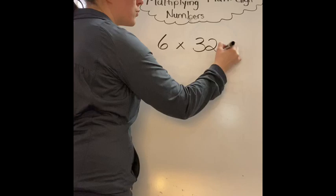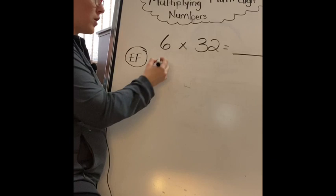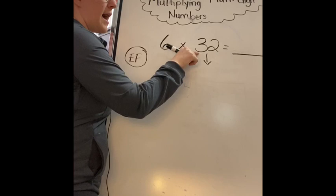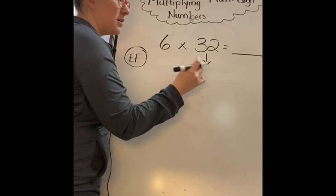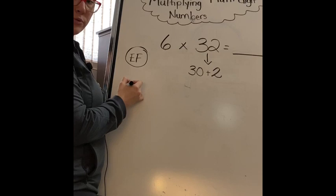The first thing we do is expanded form. We don't have to use expanded form for 6 because it's as small as it can be, but for 32 my expanded form would be, how many tens? This 3 actually represents a 30, and look at my ones, it actually represents a 2. So 30 plus 2. The second thing we do is we multiply both sides.